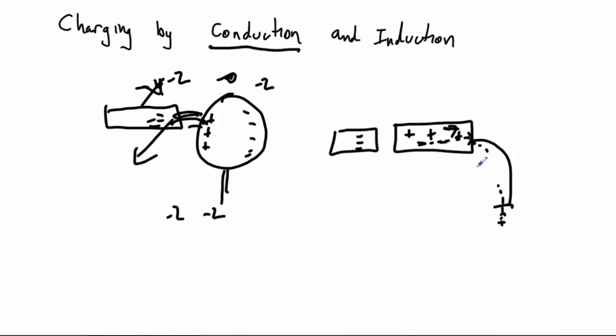And then if we then cut this wire, then when we remove this thing, even though nothing's pushing those charges anymore, they're not going to come back. So this thing still has a negative charge, and now this piece over here is going to have the opposite charge, it'll have a positive charge because we forced the negatives out of it.